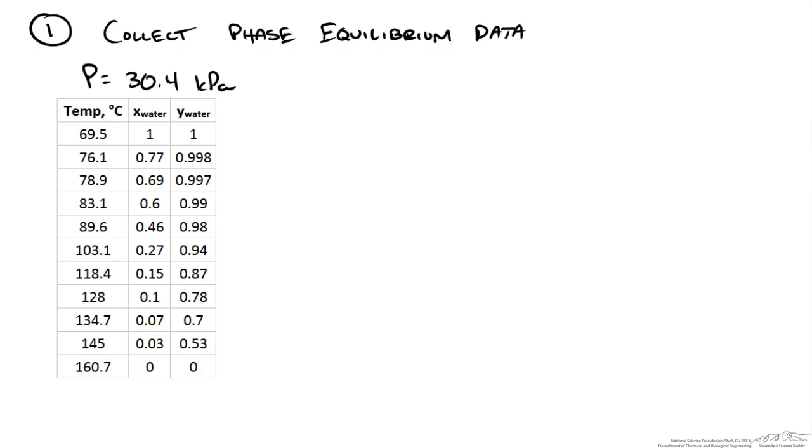I have collected phase equilibrium data for water and ethylene glycol at a pressure of 30.4 kilopascals. I got this from Perry's Chemical Engineering Handbook. So this gives us the mole fraction of water in the liquid phase, and our y is our mole fraction of our water in the vapor phase.